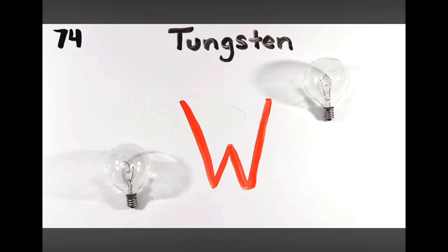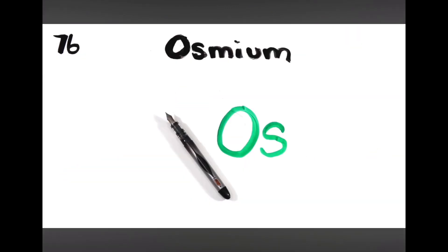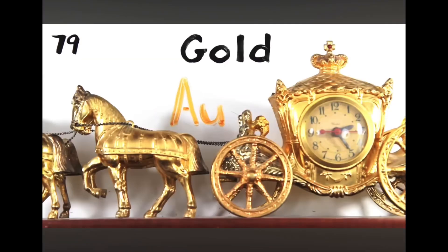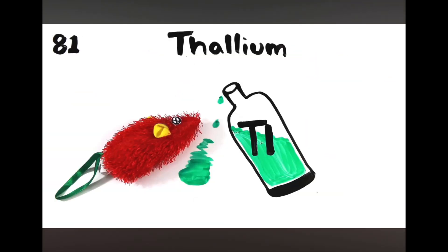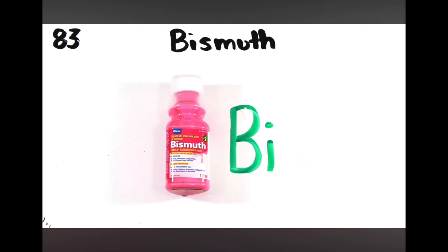Hafnium, tantalum, tungsten then we're on to rhenium, osmium and iridium, platinum, gold to make you rich till you grow old, mercury to tell you when it's really cold, thallium and lead then bismuth for your tummy.